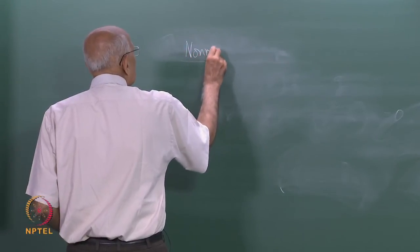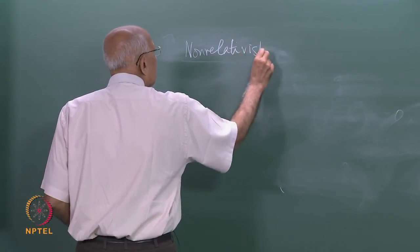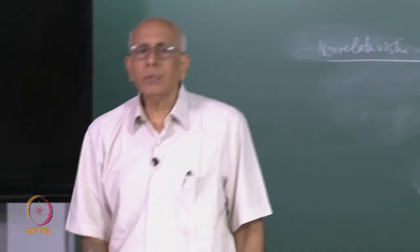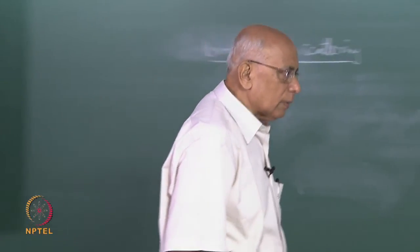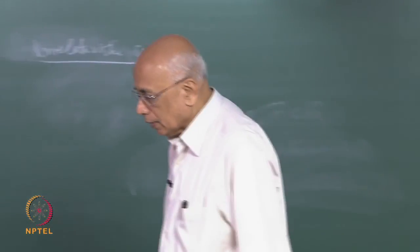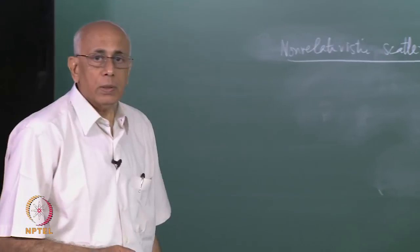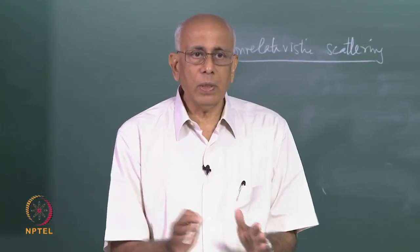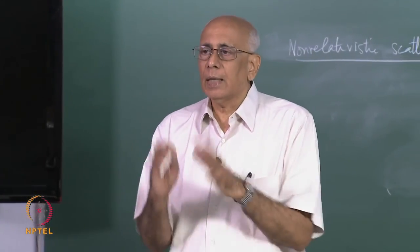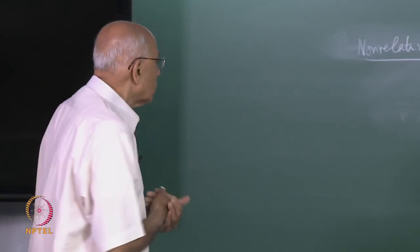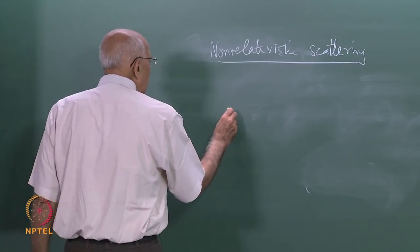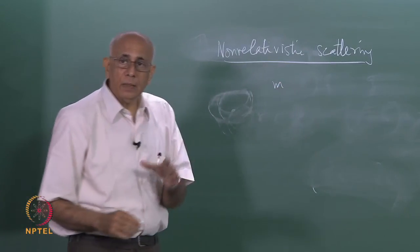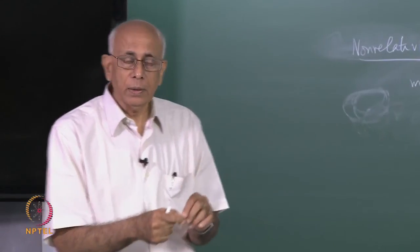We are going to look at non-relativistic scattering — the scattering of a quantum mechanical particle from some fixed static potential. Non-relativistic because we avoid complications when the particle moves at speeds comparable to the speed of light. The static potential does not change with time. We would like to know what happens when we shoot a steady stream of particles at such a potential and ask what happens to the scattering in various angles. The particle has mass m and moves under the influence of a central potential v of r about some origin.